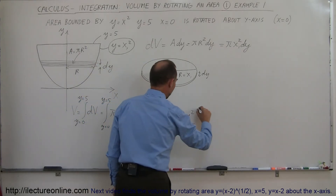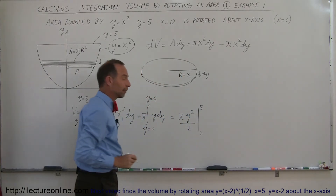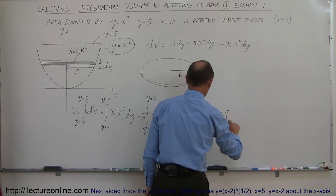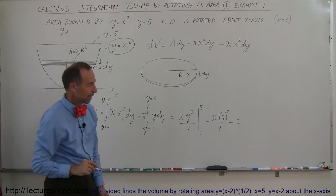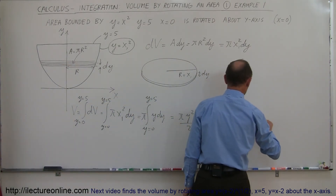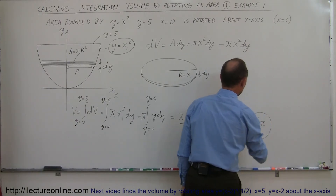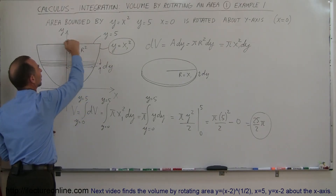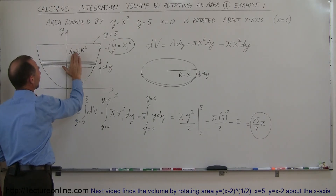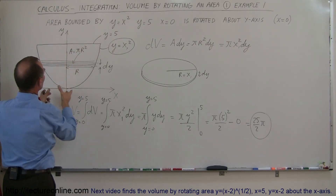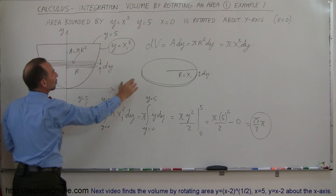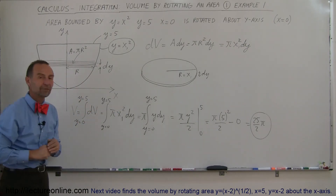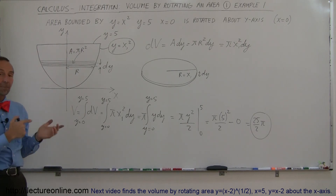And I'm ready to integrate, because that's an easy integral. Integrating y dy — adding one to the exponent and dividing by the new exponent — gives pi times y squared over 2, evaluated from 0 to 5. Plugging in the upper limit gives pi times 5 squared over 2, and plugging in the lower limit gives 0. That means the volume is equal to 25 over 2 times pi. That's the volume of the bowl-shaped region created by rotating the area bounded by the parabola, y equals 5, and the y-axis all the way around the y-axis.